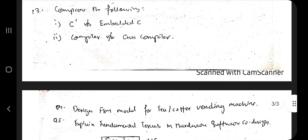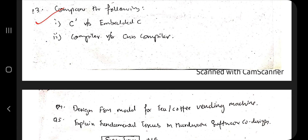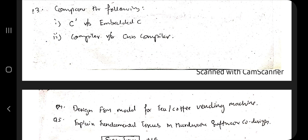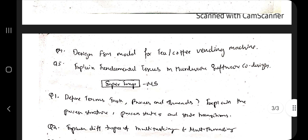Coming to the third question: compare a C compiler versus a cross compiler. The key differences — applications, disadvantages, and advantages — are the things you need to mention. If there is a code part, mention that as well, for example any syntax differences. That all adds up to your probability of getting more marks, so make sure you include it in your answer script.